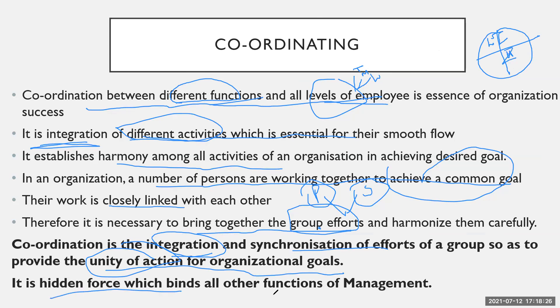Coordination is the hidden force which binds all the other functions of management. It is a hidden force because coordination is an orderly arrangement of the group that provides unity of action. It arranges everything in order — planning should be followed by organizing. If coordination is lacking at the starting level, it will ultimately break the goals of the organization. It binds all the other functions of management.